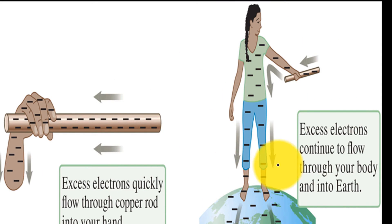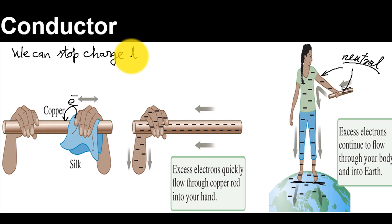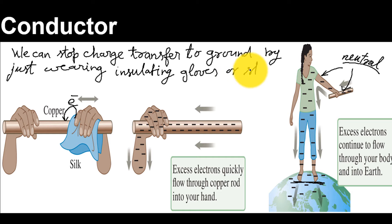The human body is also a conductor. So charged particles move freely through your body towards earth. If there are no insulators between you and ground, the charge will continue to flow into the earth. As a result, you and copper rod remains neutral despite of rod being rubbed with silk. But we can always stop charge transfer to ground by just wearing insulating gloves or insulating shoes.